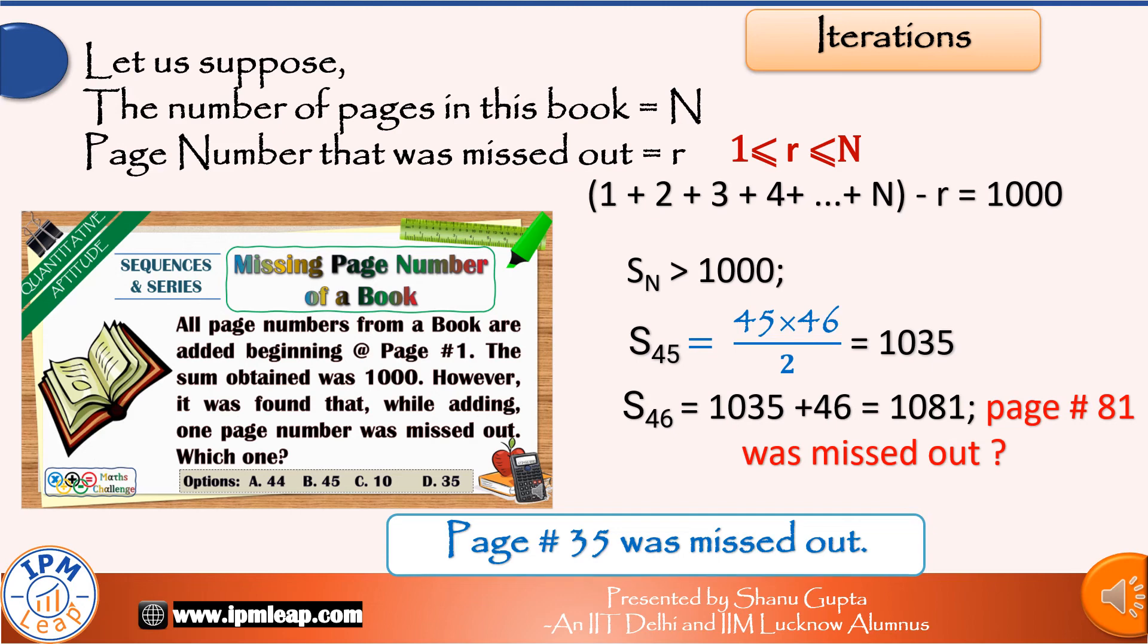What if there were 44 pages in the book? Sum of first 44 natural numbers is 1035 - page number 45 = 990. But this is ruled out since total sum of pages can't be less than 1000.